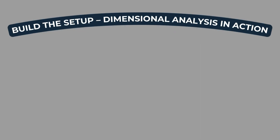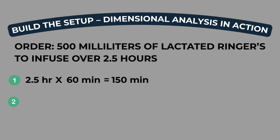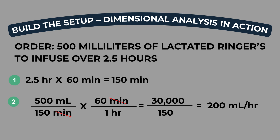Let's walk through the full setup. The order is for 500 milliliters of lactated ringers to infuse over 2.5 hours. Step one: convert the time to minutes. Step two: start with what's ordered and set up the conversion — 500 milliliters over 150 minutes, times 60 minutes over one hour. Cancel out the minutes, and now we're left with milliliters per hour. Multiply across the top: 500 times 60 equals 30,000. Multiply across the bottom: 150 times 1 is 150. Then divide — your answer is 200. The correct IV pump rate is 200 milliliters per hour.